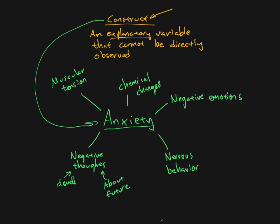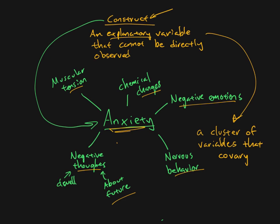So another way of thinking about a construct is—I'll just put this down here. So we can think about a construct as a cluster of related variables. So a cluster of variables that co-vary. So remember, a variable is something that can change over time. What we're saying is that all of these different things, these different variables, are all part, really, of the one larger construct.